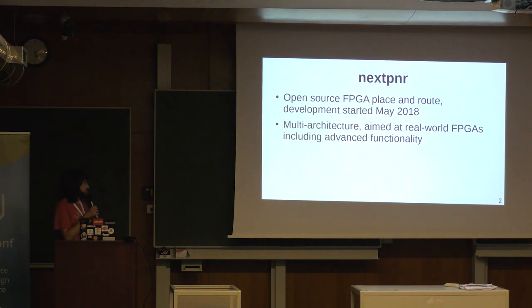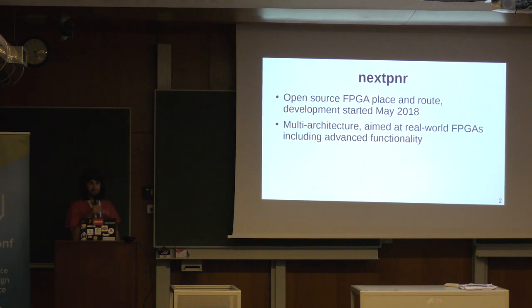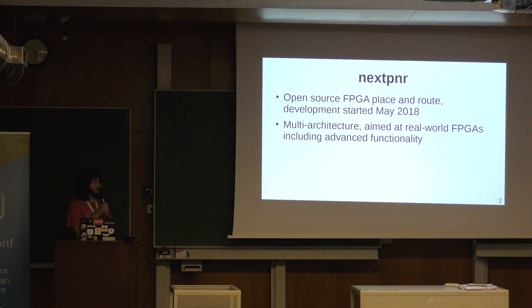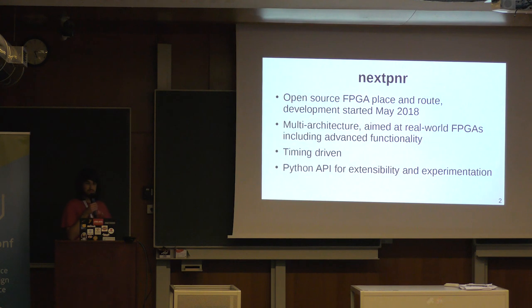NextPNR is a pretty new tool. Development started in May 2018, but it's been very actively developed. In that time we've already had contributions from 29 people, which is pretty impressive. It's a multi-architecture place and route tool aimed at real-world FPGAs, including the advanced functionality in those FPGAs. It describes architectures using code rather than XML files, which gets you a lot of flexibility for the intricacies of real-world FPGAs. It's timing-driven, unlike some of the older tools like Arachne PNR, and it has a Python API, which allows extensibility and experimentation without having to modify the C++ or spend a lot of time on implementations.